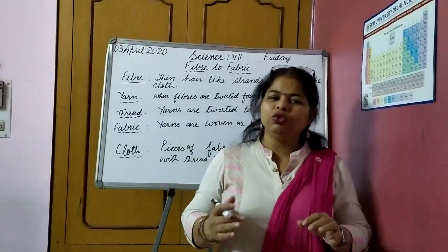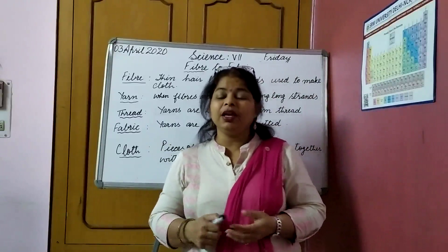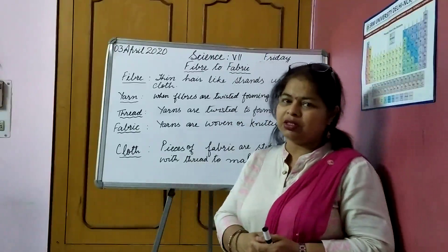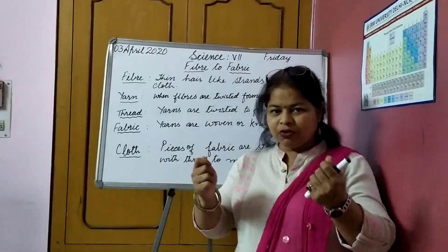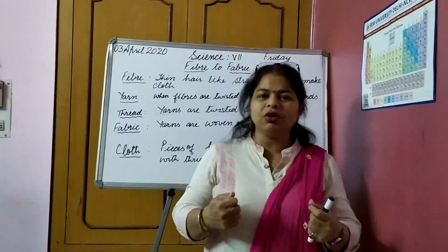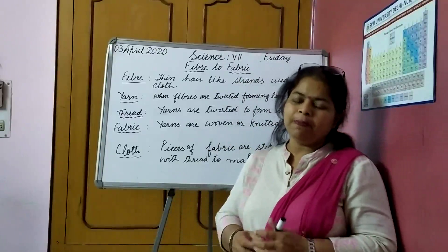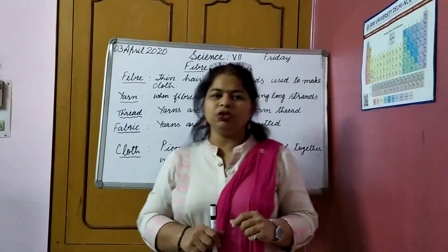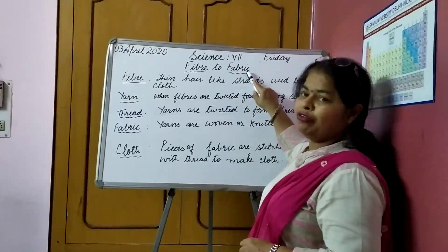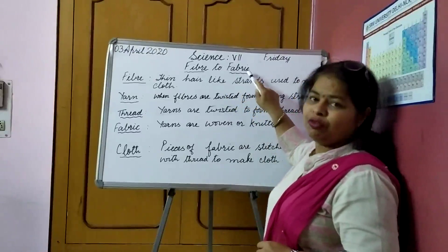Today we are going to study about clothes only. How clothes are made — I mean a piece of cloth that you see, whether it is your handkerchief, your shirt, your trouser, or any other piece of garment — how it is formed. The name of the chapter is Fiber to Fabric.